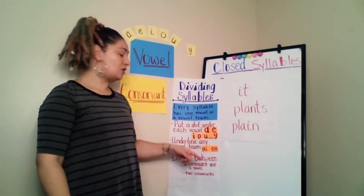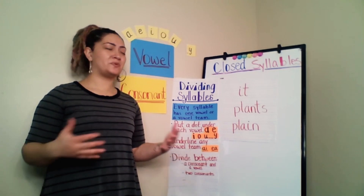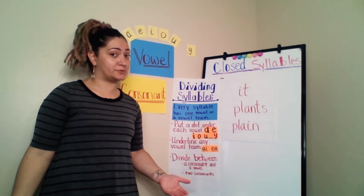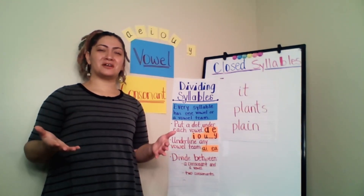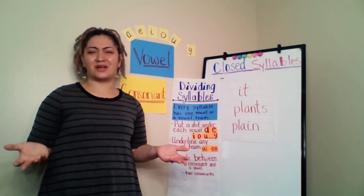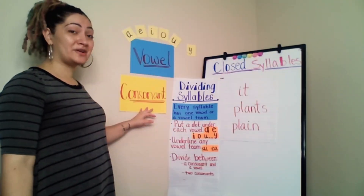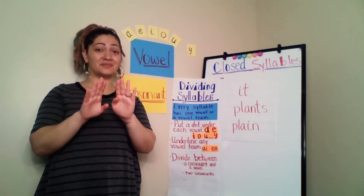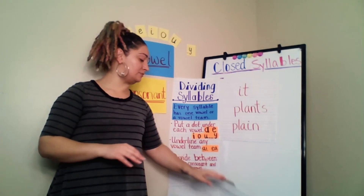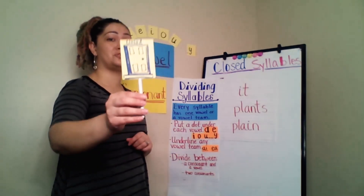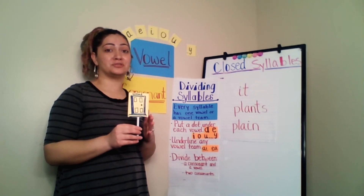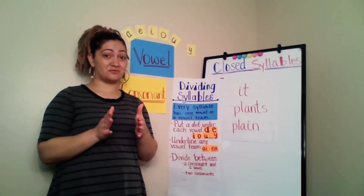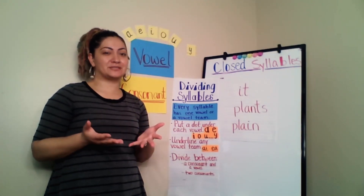Once we do all this, we're going to split the word up. We can split a word in between a consonant and a vowel, between two consonants, or between two vowels. But remember, if you split a word and it doesn't make any sense, you can try again and split it a different way. When we get to a syllable and there's a consonant after the vowel, it's going to be called a closed syllable. I'm going to show you a closed door to show that that syllable is closed. Usually when a vowel is by itself in a closed syllable, the vowel says its short sound.